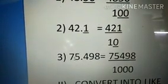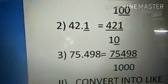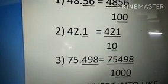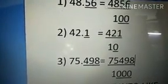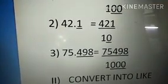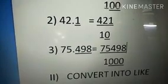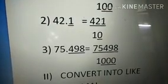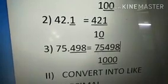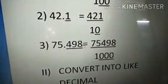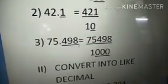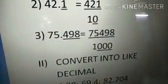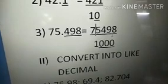Our third problem is 75.498. After the decimal, you count: 1, 2, 3. I underline those 3 digits. In the denominator, I add 3 zeros, giving us 1000. In the numerator, I write the number except the decimal. After the decimal point, you have that many zeros to add, so you get 1000. Our answer is 75498 divided by 1000.